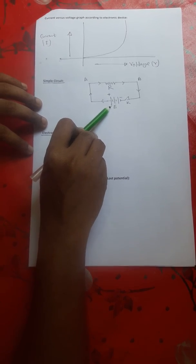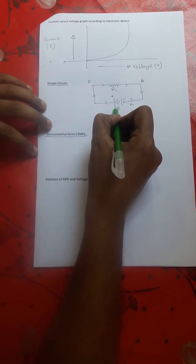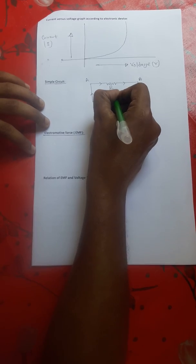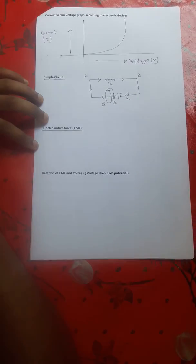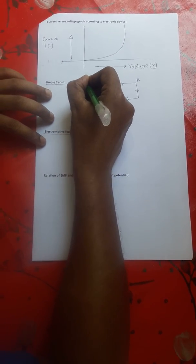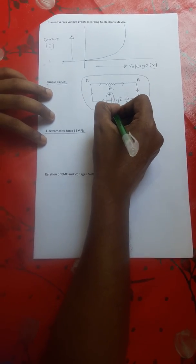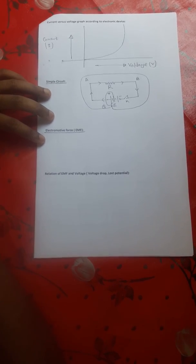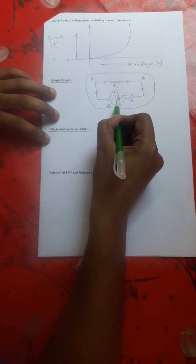The positive terminal of the battery supplies electric current. Since positive charge flows inside the electric circuit, let Q amount of charge be supplied by this positive terminal of the battery through resistance R. This Q charge flows from the positive terminal through the entire circuit and returns back to its previous position.